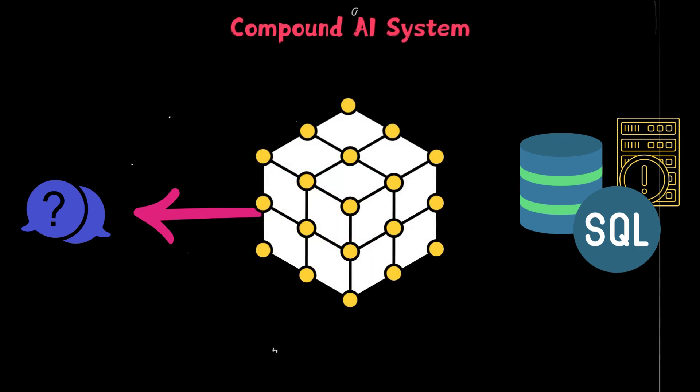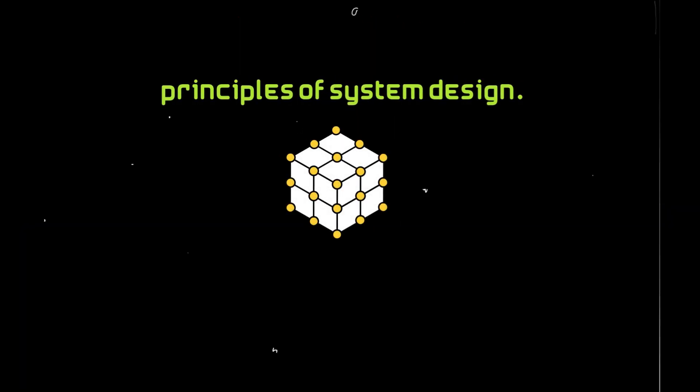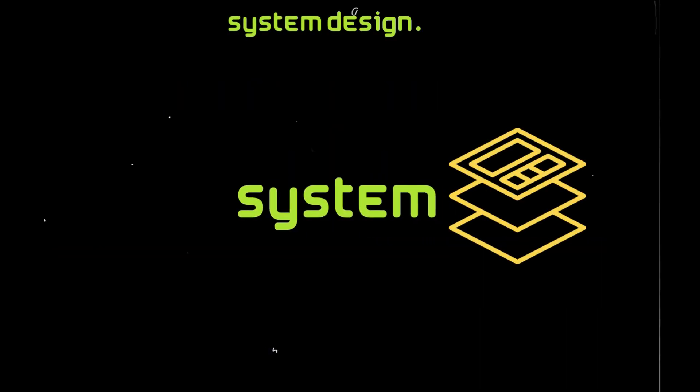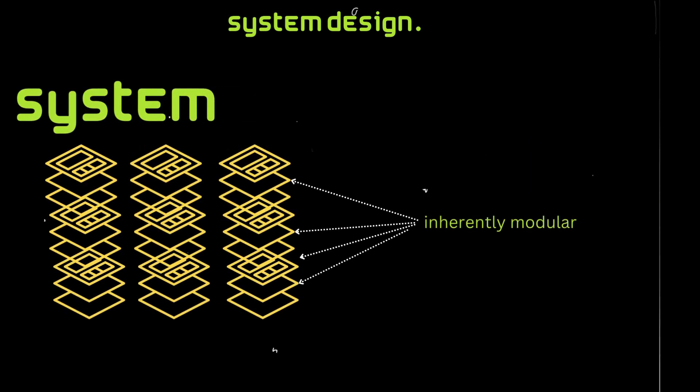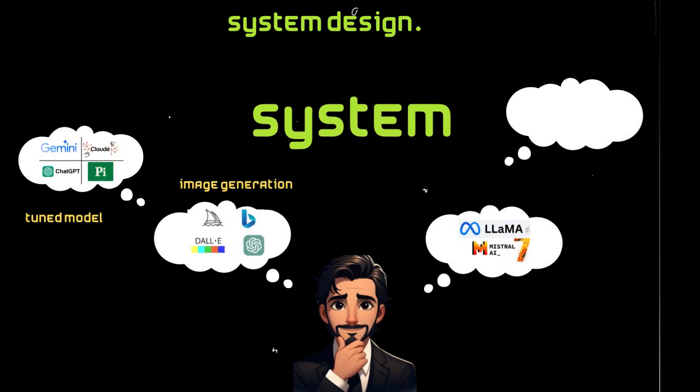This is an example of a compound AI system, and it recognizes that certain problems are better solved when you apply the principles of system design. By the term system, you can understand there's multiple components. So systems are inherently modular. I can have a model, I can choose between tuned models, large language models, image generation models.